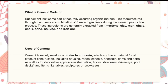What is cement made of? Cement is not a naturally occurring organic material; it is manufactured through the chemical combination of eight main ingredients during the cement production process. These ingredients are generally extracted from limestone, clay, marl, shell, chalk, sand, bauxite, and iron ore. Cement is mainly used as a binder in concrete, which is a basic material for all types of construction including housing, roads, schools, hospitals, dams, and ports, as well as for decorative applications like floors, staircases, driveways, pool decks, and items like tables, sculptures, or bookcases.